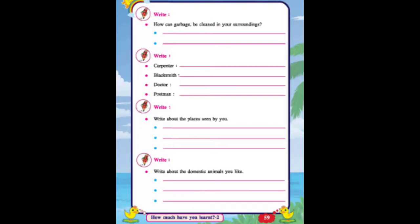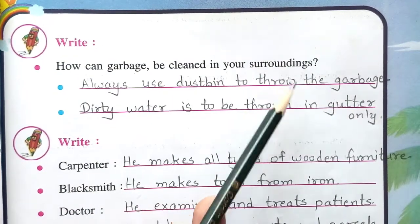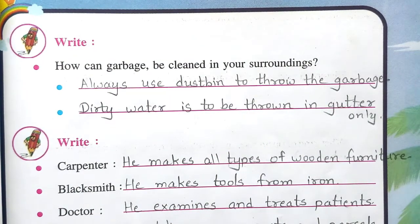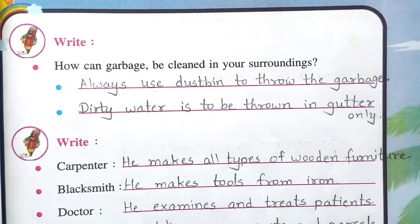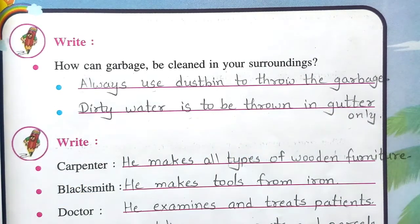Now see on the next page, page number 59. How can garbage be cleaned in your surroundings? Always use a dustbin to throw garbage. Dirty water is to be thrown in the gutter only. Only then will our surroundings remain clean.